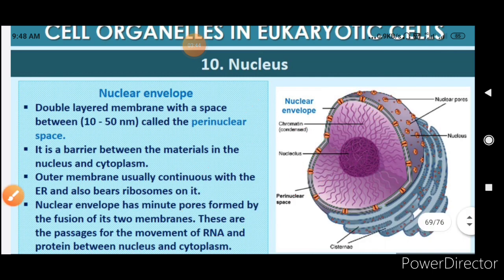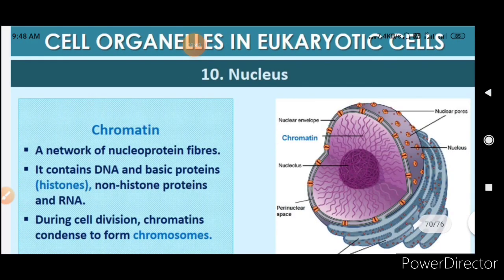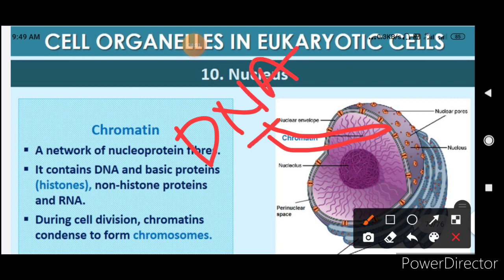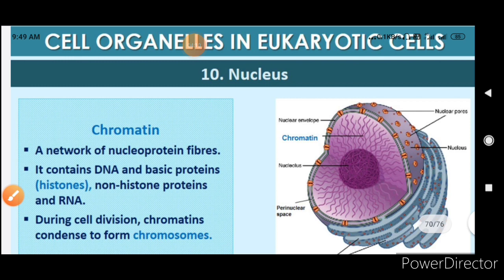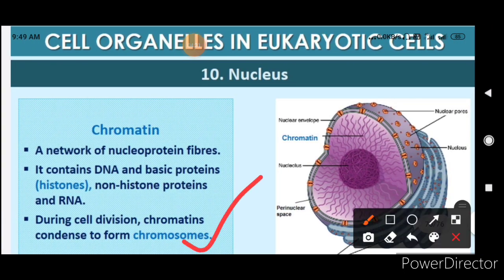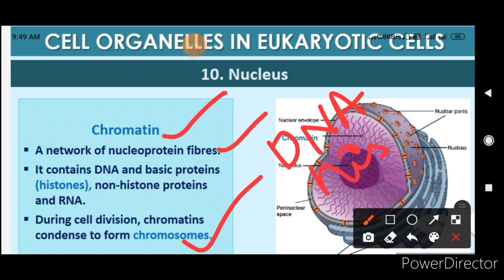Chromatin is a network of nucleoprotein fibers. As seen in the diagram, these fibers are made up of DNA, plus basic proteins called histones, plus non-histone proteins, and RNA — all associated inside the chromatin. During cell division, this chromatin condenses to form chromosomes.